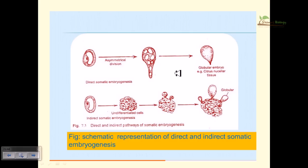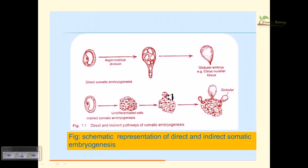This diagram compares direct and indirect somatic embryogenesis. In direct somatic embryogenesis, the cell grows and directly produces a globular embryo. In indirect embryogenesis, the cells taken are not destined to form embryos, so they form undifferentiated callus first. When callus is placed in embryogenic medium, it produces a globular-shaped embryo, which further matures through globular → heart-shaped → torpedo-shaped stages until the embryo is fully mature.